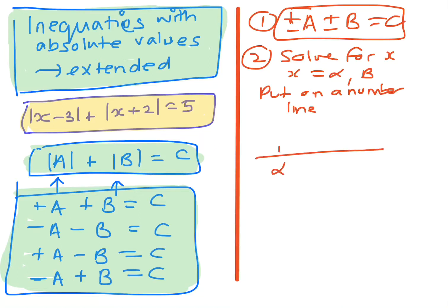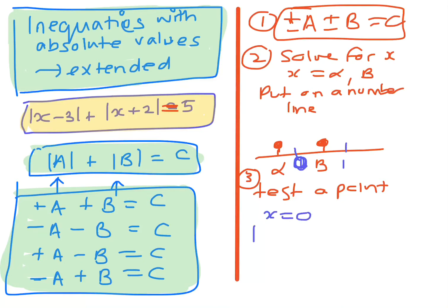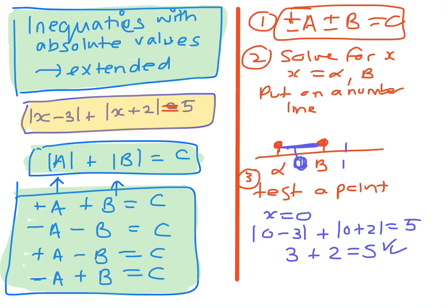You put alpha and beta on a number line with an open or closed circle depending on whether it's a solution — if it's equal and you found a solution at that point, it will be a filled-in circle. Then you test a point to see if it's true. Say zero is in between; if you put in x equals zero you get zero plus two equals five — the absolute value of minus three is three, the absolute value of two is two — so that works.